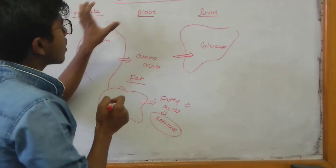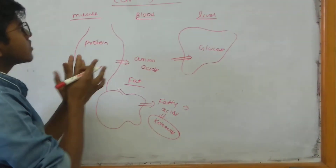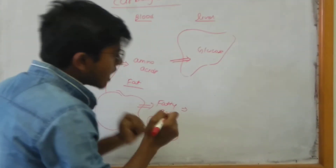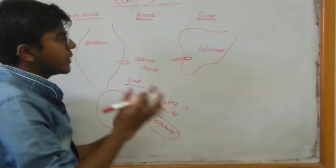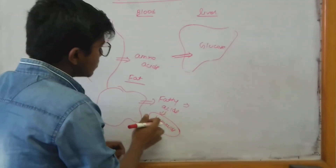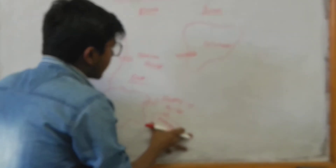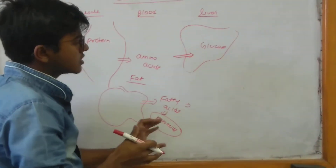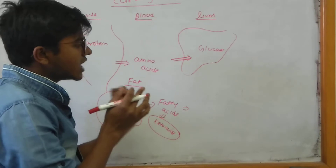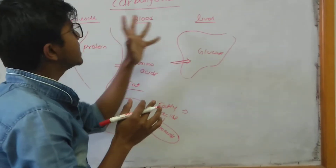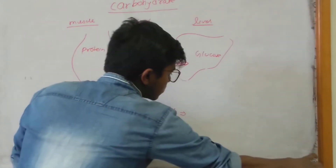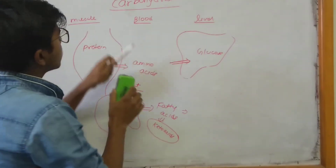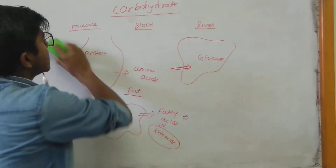In summary, glucocorticoids spare carbohydrate metabolism by using fats and proteins for energy production, while glucose utilization is actually inhibited by glucocorticoids. This is the overall effect of glucocorticoids on general metabolism.